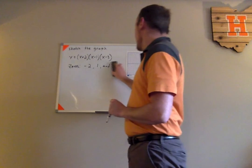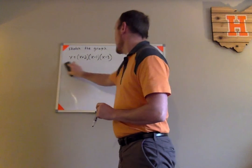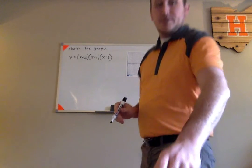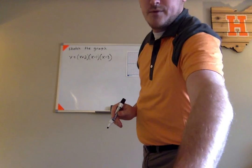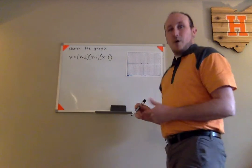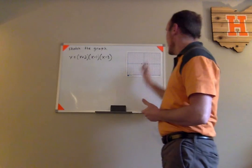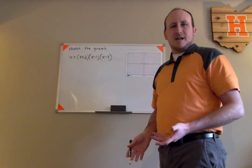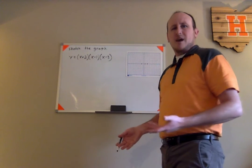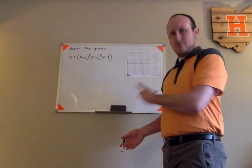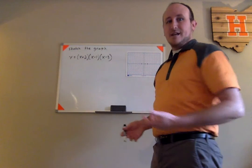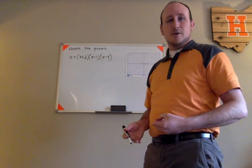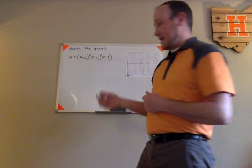Now we can take this a step further. Now that we've dealt with the zeros, let's find the y-intercept of this function — where it crosses the y-axis. We already know where it crosses the x-axis, and we can also mark where it crosses the y-axis. That can simply be found by plugging in zero for x.